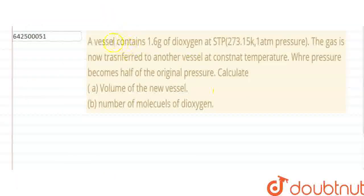Okay, so hello everyone. This question says that a vessel contains 1.6 gram of dioxygen at STP. The gas is now transferred to another vessel at a constant temperature, where pressure becomes half the original pressure. So, we have to calculate the volume of the new vessel and the number of molecules of dioxygen.